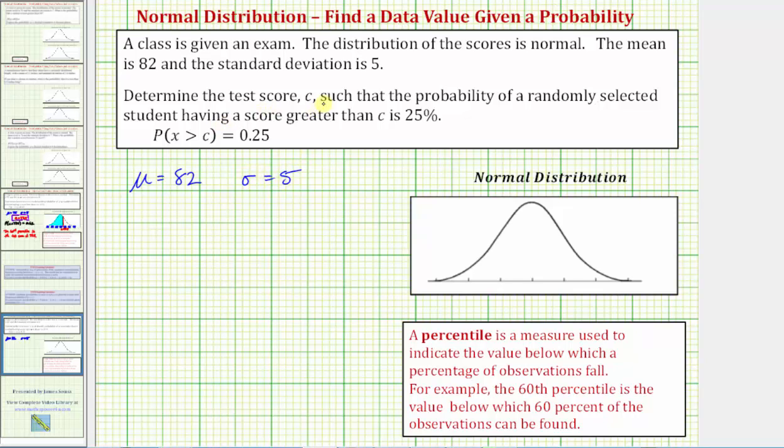We're asked to determine the test score, c, such that the probability of a randomly selected student having a score greater than c is 25%. We can express this using this notation here, where we say the probability of X greater than c equals 0.25.